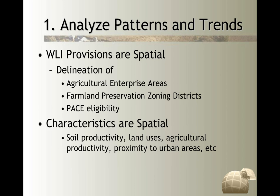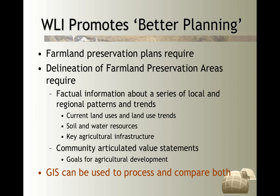The characteristics are really spatial: soil productivity, land uses, agricultural productivity, proximity to urban areas. If you look at the Working Lands Initiative law, you'd be hard-pressed to find criteria that weren't related to a geographic place. The law actually promotes better planning — it requires farmland preservation plans to delineate farmland preservation areas, using factual information about current land uses, land use trends, demographic trends, and how we expect our communities to change. There's a lot in there about soil and water resources and mapping key agricultural infrastructure — much of which we can do with existing data sets.